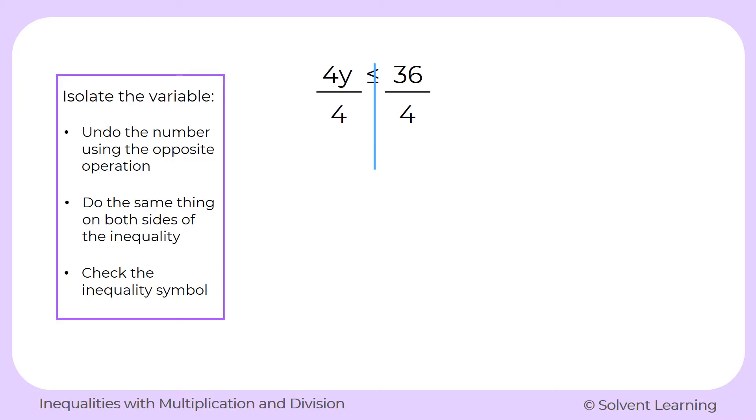So on the left, we have a 4 in the numerator and a 4 in the denominator of this fraction. That means they're essentially going to cancel each other out. 4 divided by 4 is equal to just 1. So we would have 1 times y, which is the same as just y. So all of that simplifies to just y.